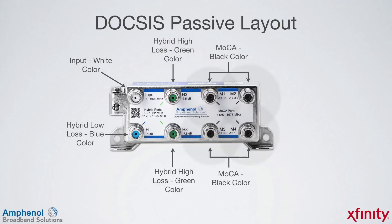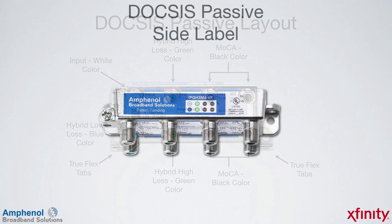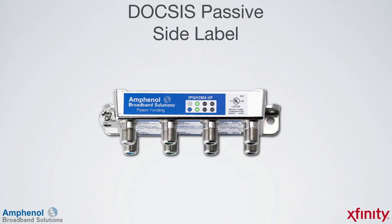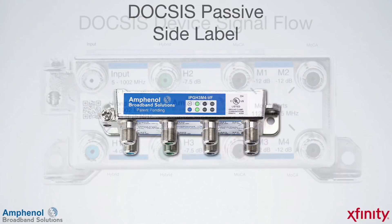On the right side are four MOCA ports, identified with a black port color. The XI terminal devices would be connected to these ports. There are two TruFlex tabs that provide flexible mounting options, and on the side is a label for easy port identification when mounted horizontally.